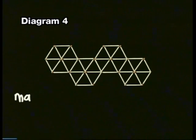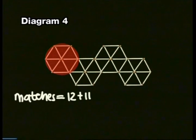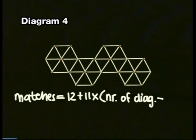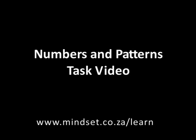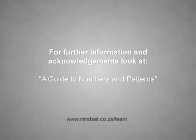Well done, you guys. For those of you watching, if you check this with your matches, you will see that Gerard and Segura are correct. They have found a rule that works for any number of hexagons built in this way: the total number of matches equals 12 plus 11 times the number of diagrams minus one. Thank you for joining us, Grade Tens. Remember to look at the tasks for this section in the Numbers and Patterns task video. You'll also be able to learn more on our website at www.mindset.co.za.